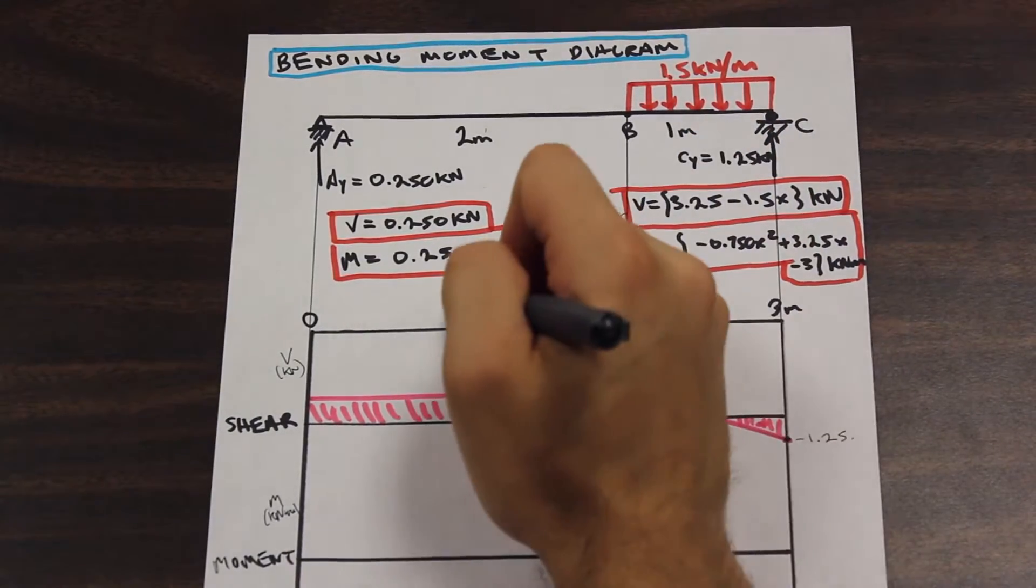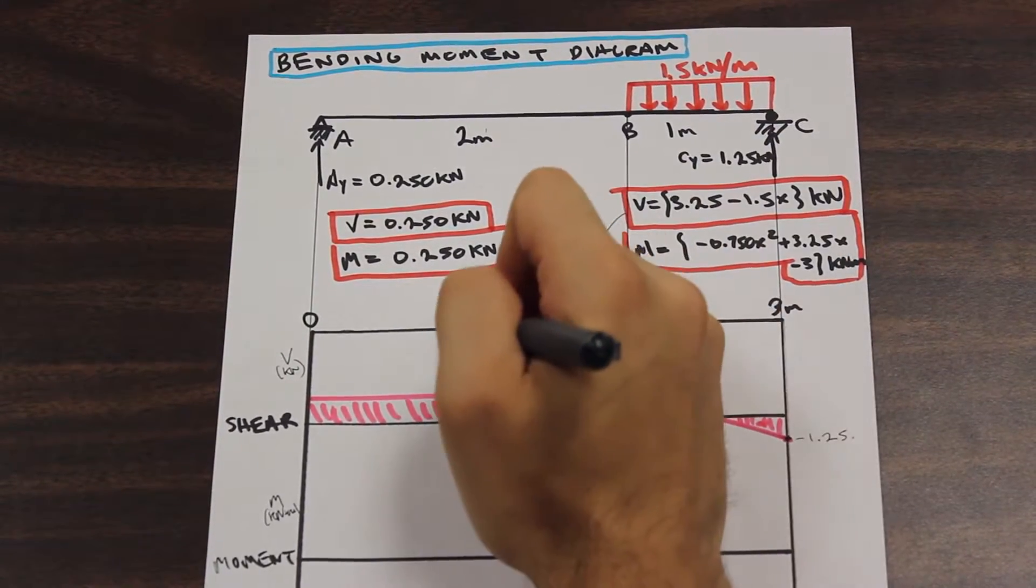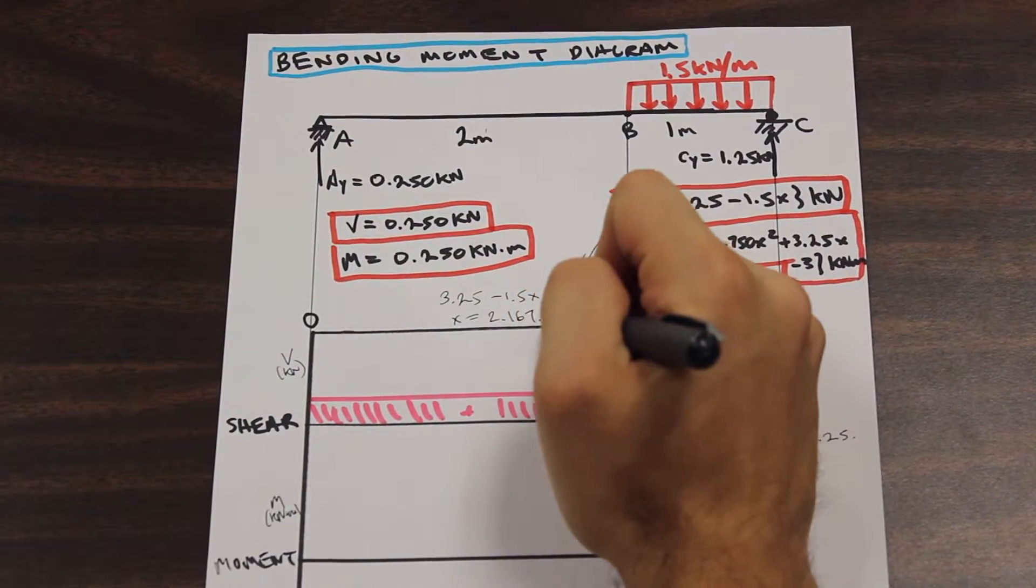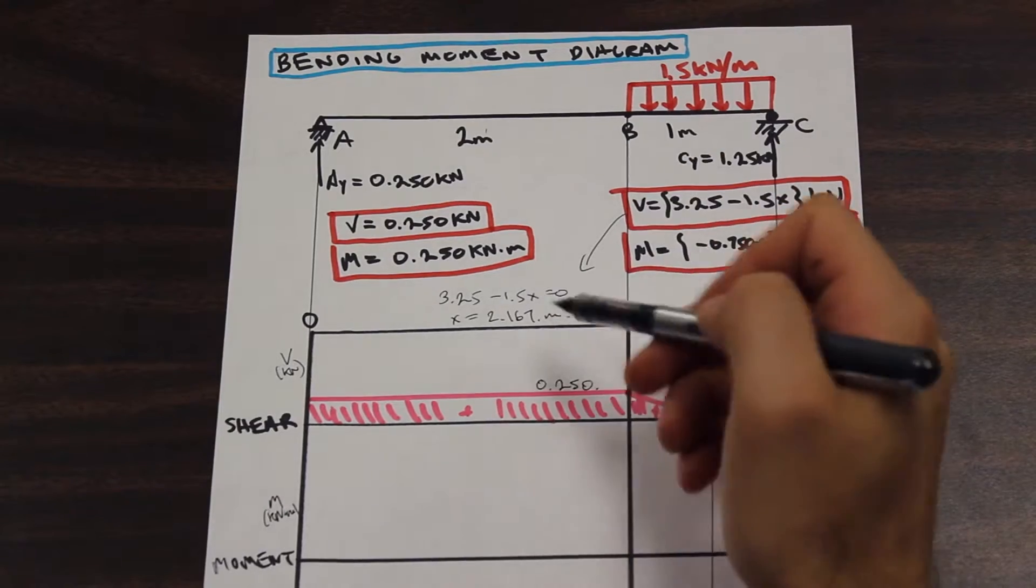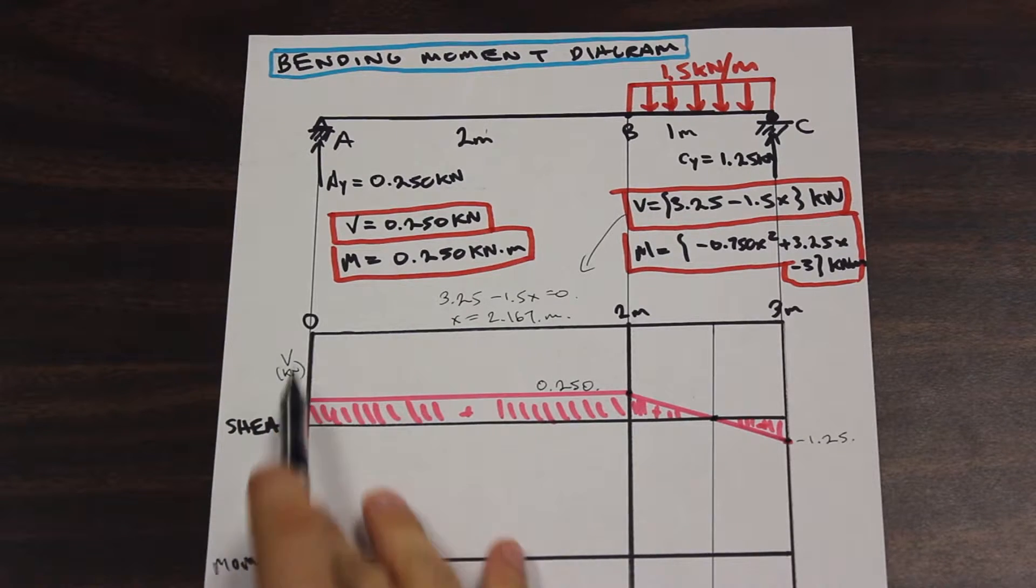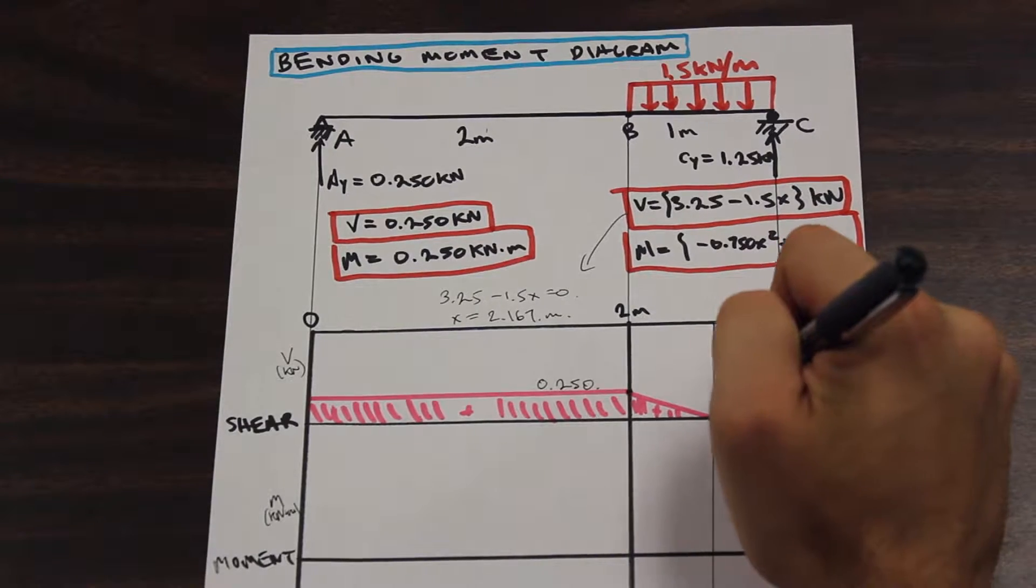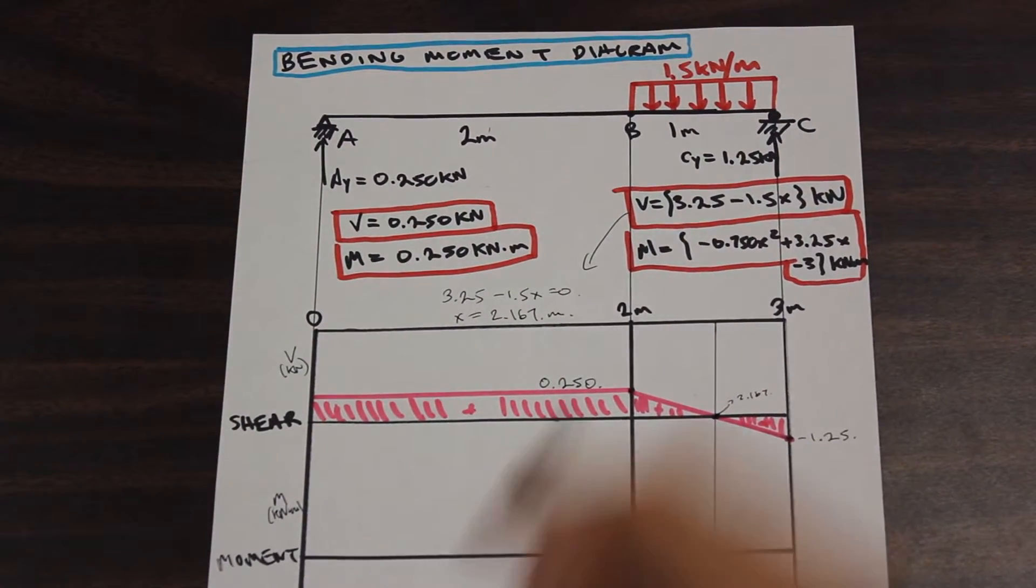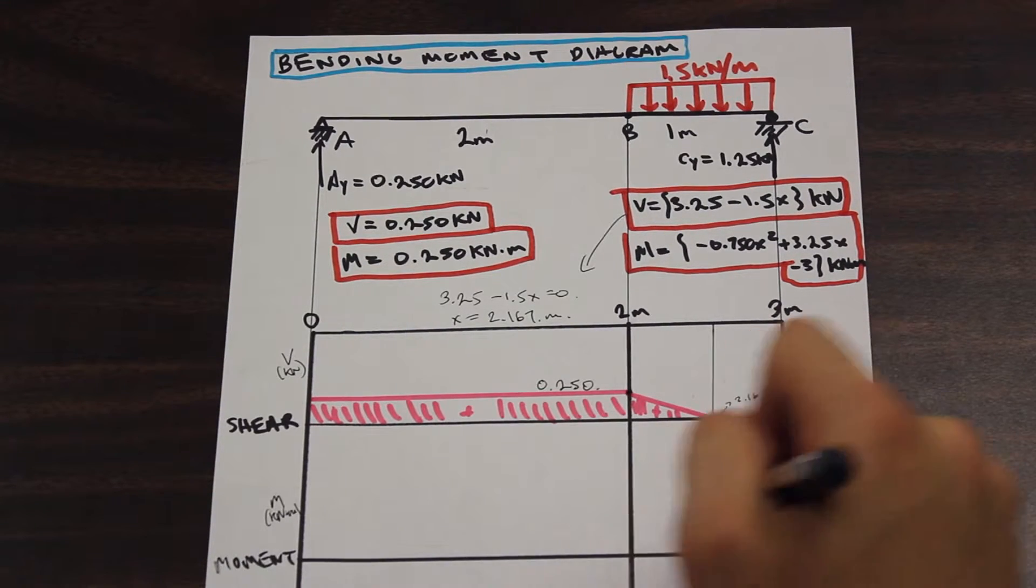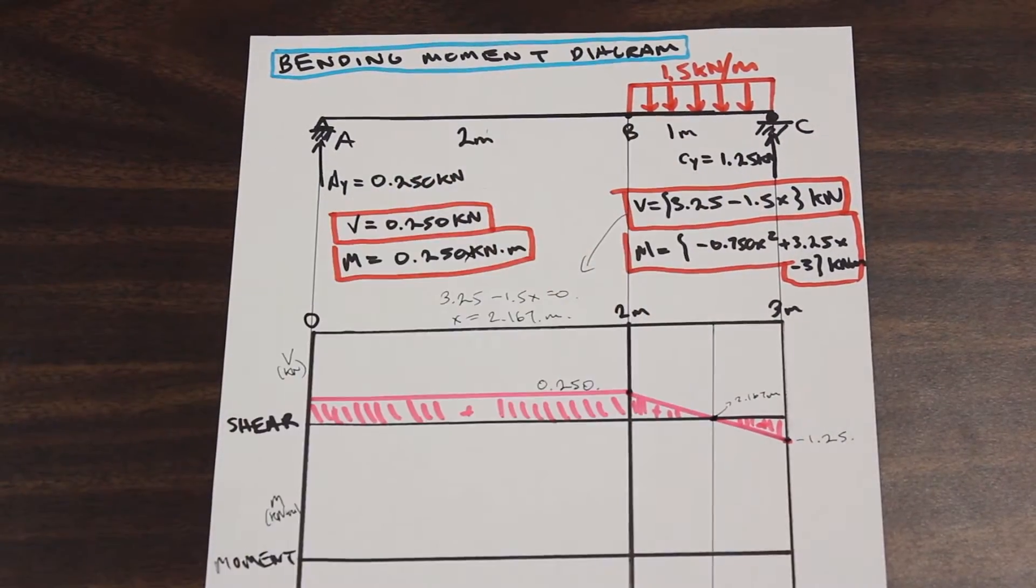So if we just take this down here, and we say 3.25 minus 1.5x equals zero, and we just go ahead and solve for x, you should see that x is equal to 2.167 meters. So what that means is that the point of zero shear acts 2.167 meters from the origin or from our start point. So this is, we're going to say that this is 2.167 meters at this point. And we're going to need that information when we get to that part. Let's start with here. Point here, sorry, that's supposed to be an x, excuse me.